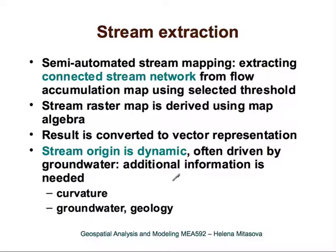We apply this threshold or combination of additional parameters using map algebra. As we have discussed when we talked about display of line features, it is often useful to convert the result — the raster representation of the stream network — to vector representation and build its topology.